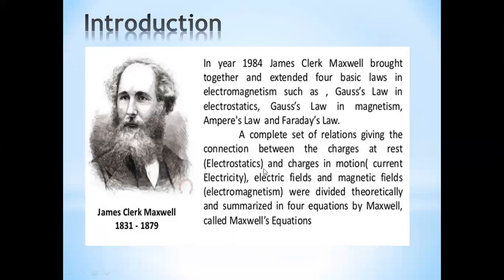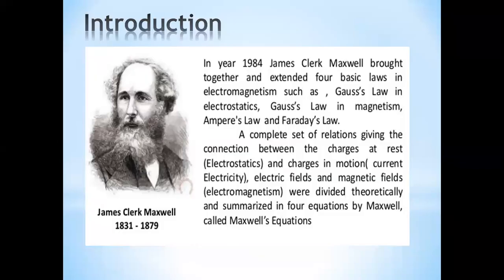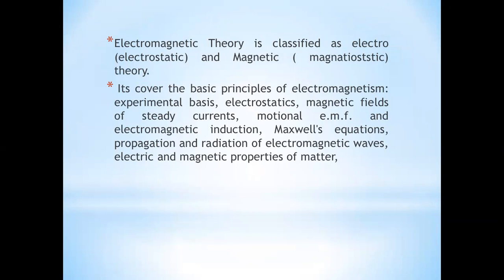Good morning, dear students. Today we will discuss electromagnetic theory. This is Unit 2. Electromagnetic theory is classified as electro and magnetic — electro meaning electrostatics and magneto meaning magnetostatics. It covers the basic principles of electrostatic and magnetic fields, steady current, motion of EMF, and electric and magnetic properties of matter.